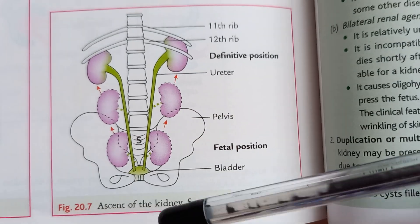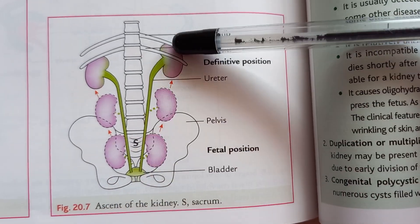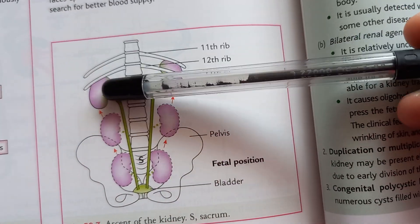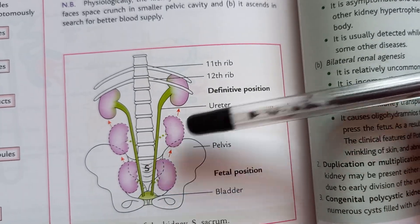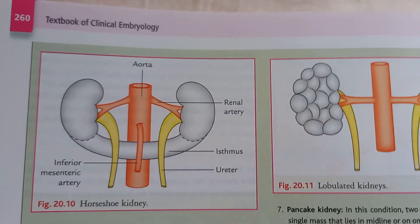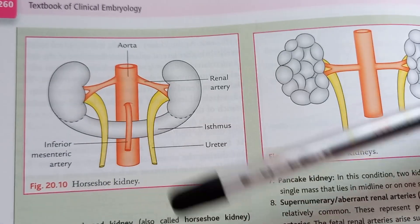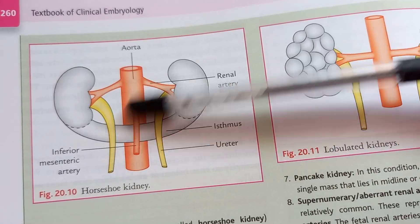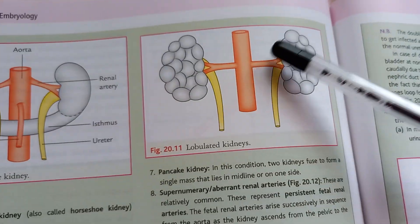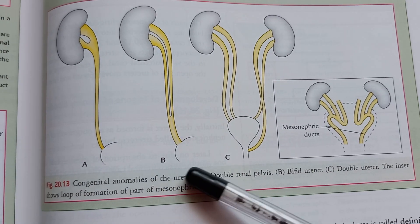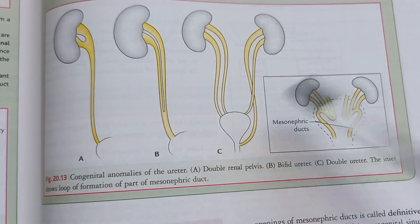In this diagram they're showing you the ascent of the kidneys — how the kidney ascends from below. Why does it ascend? Because the pelvis is too small, so it ascends to get better blood supply at the top. They explain the reason too, which is nice. And by understanding this growth you can predict common anomalies, like the horseshoe kidney and the lobulated kidney. They also show congenital anomalies of the ureter — that's the whole point of reading embryology, to know what common anomalies will be found in people.